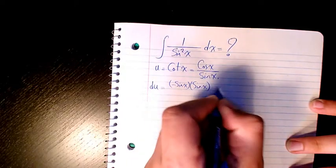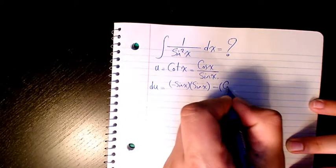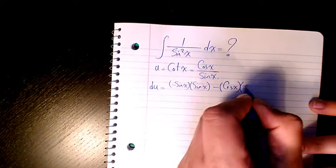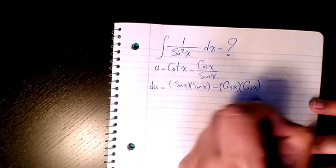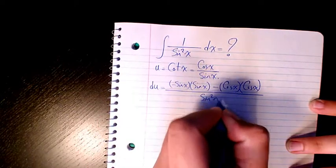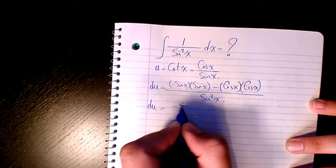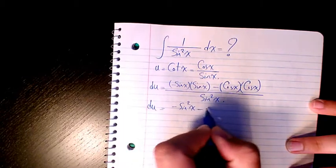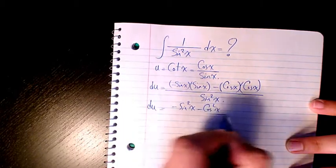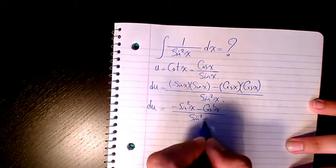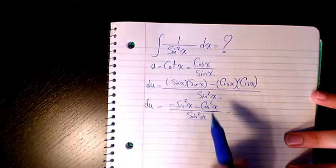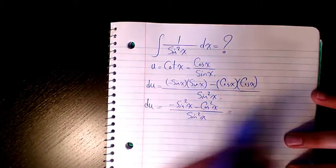which is sine x, minus the numerator times the derivative of the denominator, divided by the denominator squared. That will be negative sine squared x minus cosine squared x divided by sine squared x. You know sine squared plus cosine squared is 1, so